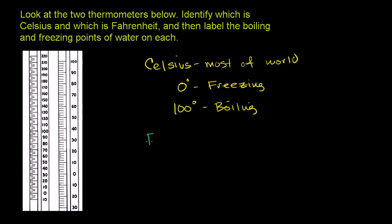On the Fahrenheit scale, which is used mainly in the United States, the freezing point of water is 32 degrees. 32 degrees is freezing, and boiling of water is 212 degrees.